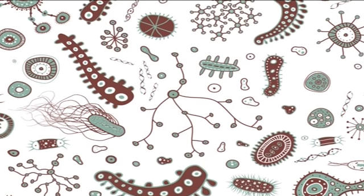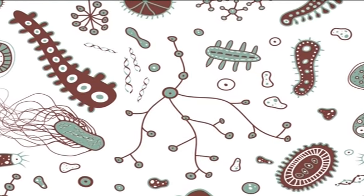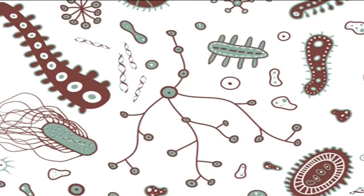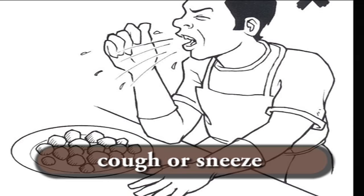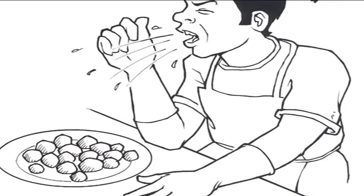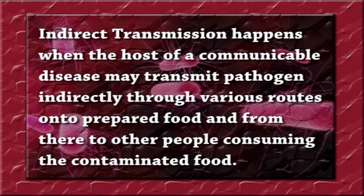When the moisture from smaller droplets evaporates, minute particles of virus or bacteria, which are called droplet nuclei, remain suspended in the air. The transmission of foodborne illnesses can occur either directly or indirectly. In the case of direct transmission, the microbes may be transmitted from the food handler directly to the food. When you cough or sneeze on or near the food, droplets containing microorganisms may fall on the food and lead to illness. Indirect transmission happens when the host of a communicable disease may transmit pathogens indirectly through various routes onto prepared food and from there to other people consuming the contaminated food.